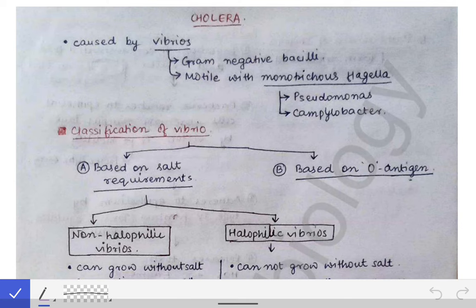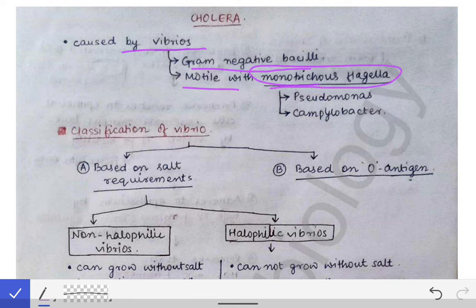In that case you have to suspect cholera and answer the given questions. Starting with the causative organism: cholera is caused by Vibrio. These vibrios are gram-negative bacilli and they are motile. They have monotrichous flagella — this is important for MCQs. Other bacteria which also have monotrichous flagella are Pseudomonas and Campylobacter, so remember all three together.